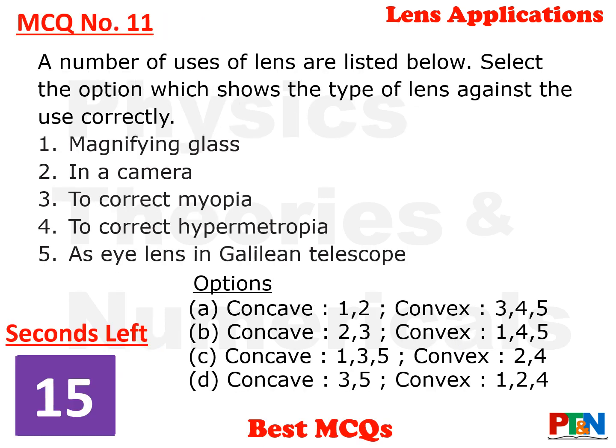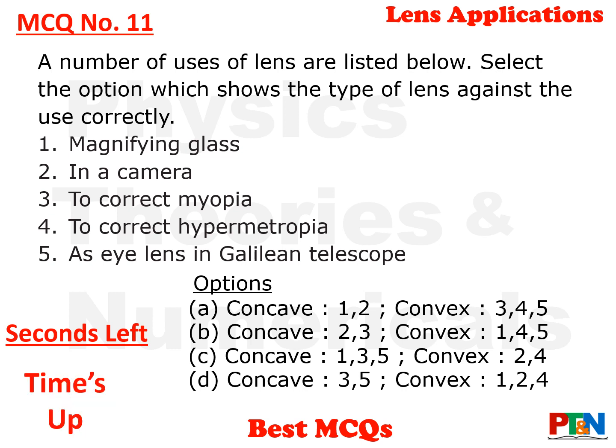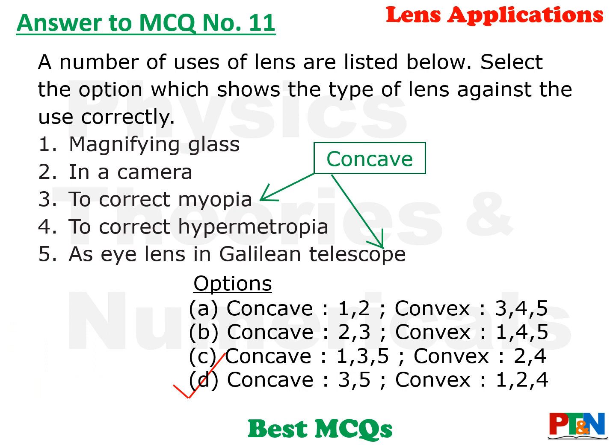Next — and last — MCQ for this video: five users or applications of lenses are listed. You need to identify which application corresponds to which lens and select from the options. You have 15 seconds. The answer is option D — serial numbers three and five use concave lenses, as marked in the slide. The other applications — magnifying glass, camera, and correcting vision in hypermetropia — use convex lenses. So the answer is option D.